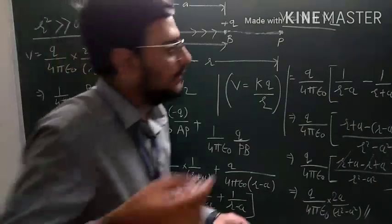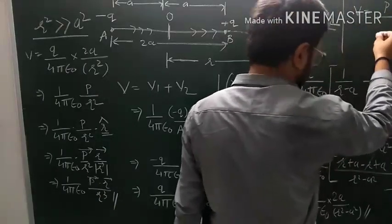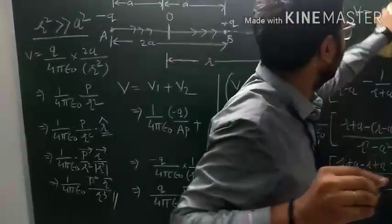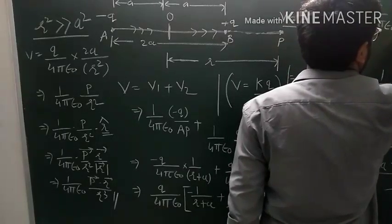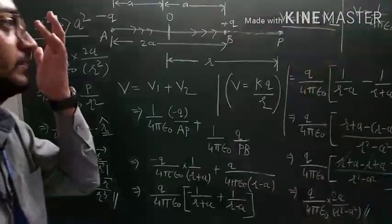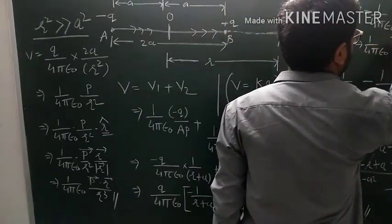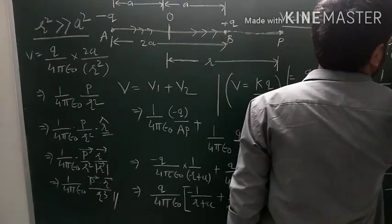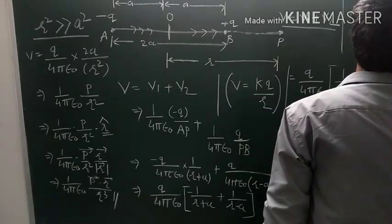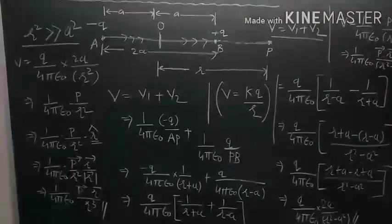For a general dipole, from the earlier equation we can write: V equals (1/4πε₀) times P upon (R²−a²). In vector form, we write: V equals (1/4πε₀) times vector P dot vector R divided by (R²−a²) times magnitude R.